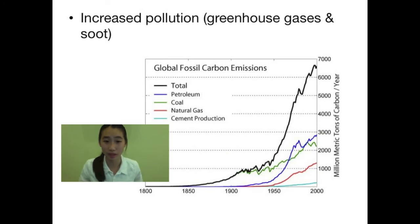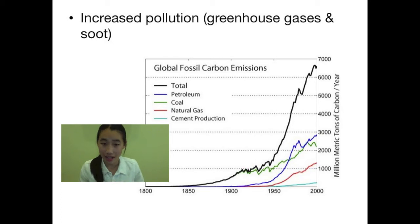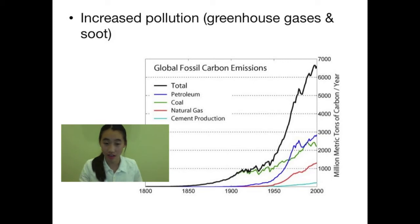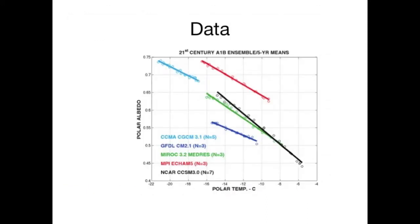The third cause is increased pollution, specifically greenhouse gases and soot. Greenhouse gases contribute to the impact of the greenhouse effect. Soot is a byproduct of carbon — it's black, so when soot lands on snow and ice, it darkens the surface, meaning more heat is absorbed instead of being reflected, and that lowers the albedo. In this graph, we can see the relationship between temperature and albedo: as temperature gets warmer, albedo decreases.